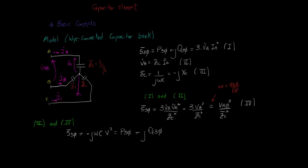Comparing with the general expression, we can see that the three-phase complex power has only its reactive power, which makes sense due to the fact that there is no resistance in our capacitor model. As the three-phase complex power was defined as the power consumed by the capacitor bank, the minus sign means that this element actually generates reactive power.